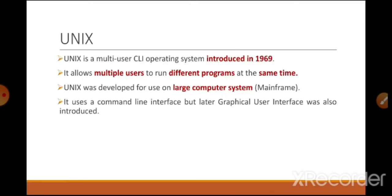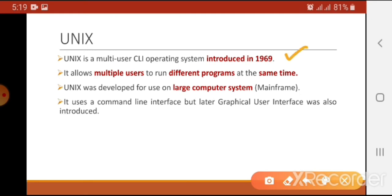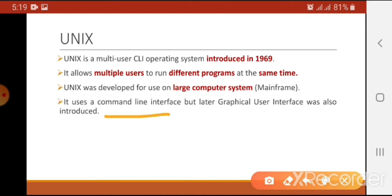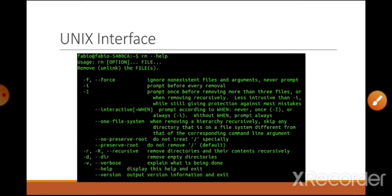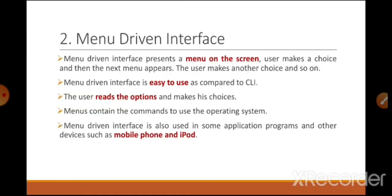The second operating system that uses command line interface is UNIX. UNIX was also an old operating system introduced in 1969, but it differs from DOS because it allows different programs to run at the same time with multiple users. In its early phases UNIX was command line based, but later its graphical user interface was also introduced.